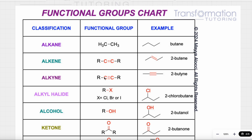If I have a C triple bond C, that's an alkyne, ending in '-yne'. Here I have a triple bond — this is called 2-butyne. Notice that the ending tells us what kind of functional group we have: '-ane' means alkane, '-ene' means alkene, '-yne' means alkyne — single, double, triple.